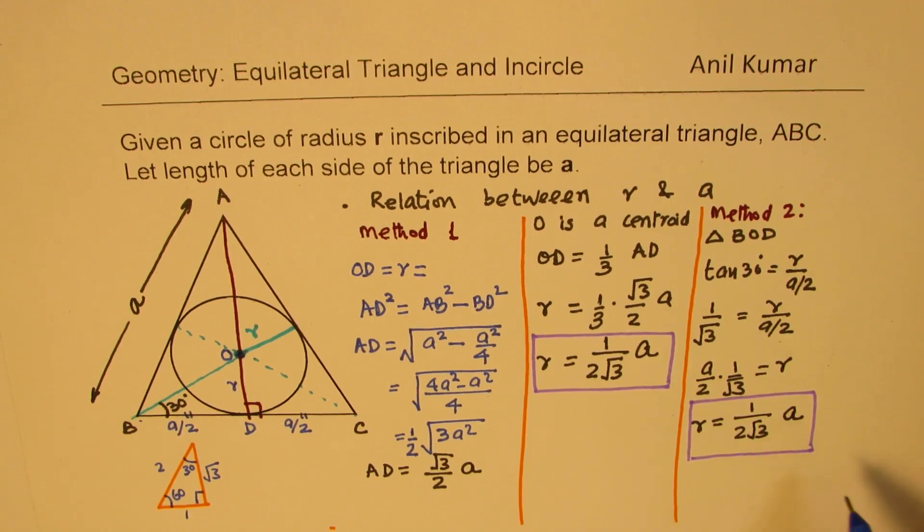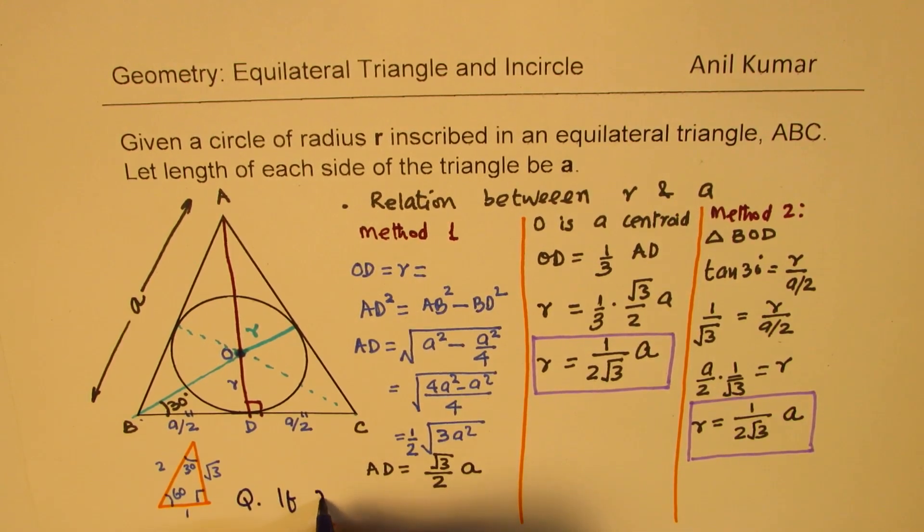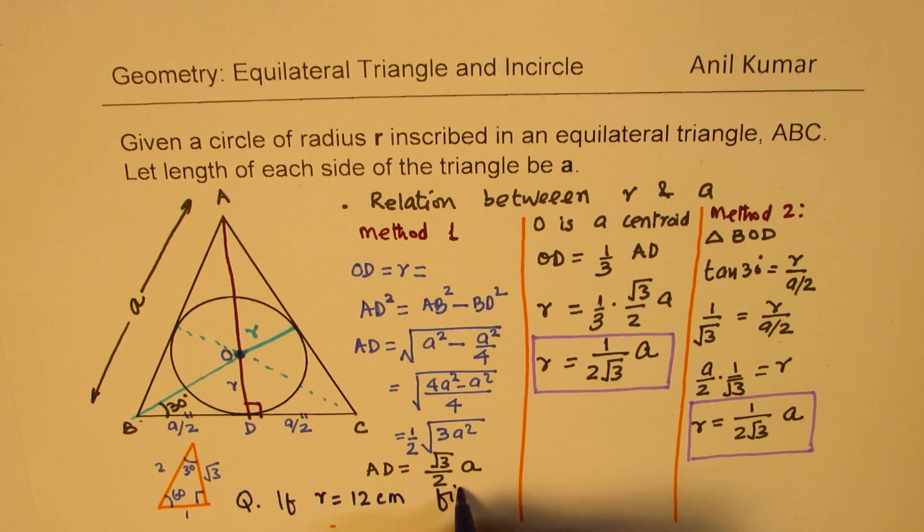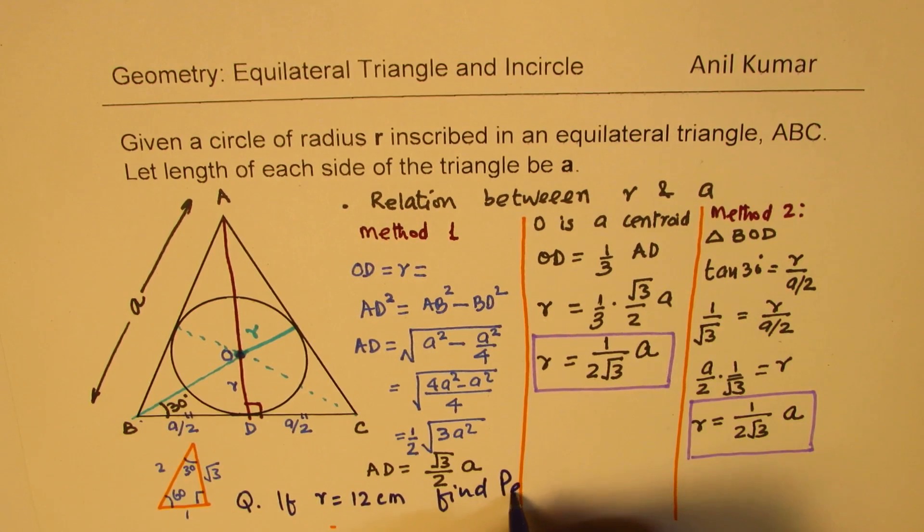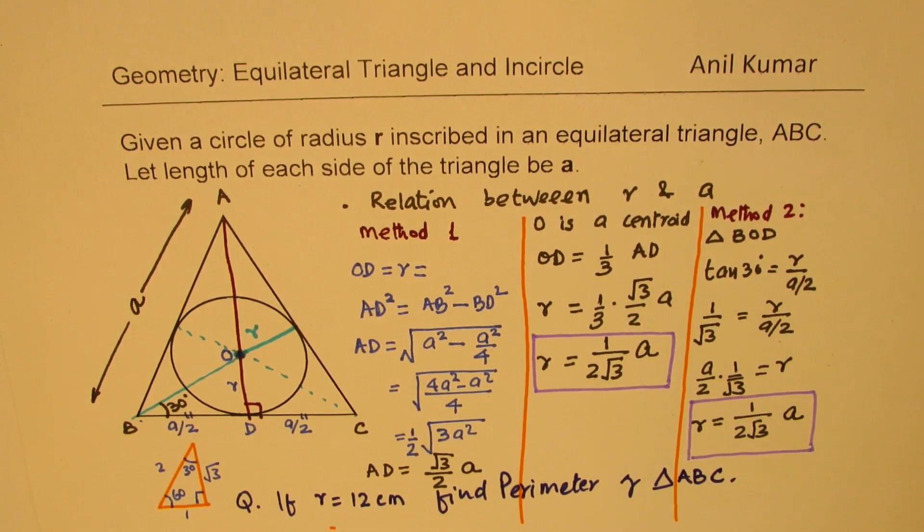Now, as a practice question, question for you is, let me write down a question for you. Question, if r equals to 12 centimeters, find perimeter of triangle ABC. In this particular case, where triangle is equilateral triangle. So clearly, perimeter is 3 times a. There are three sides, all equal. You can use this formula and figure it out. I hope that makes sense.